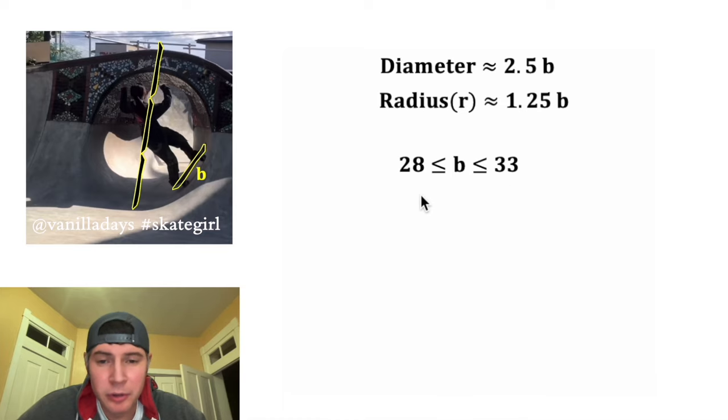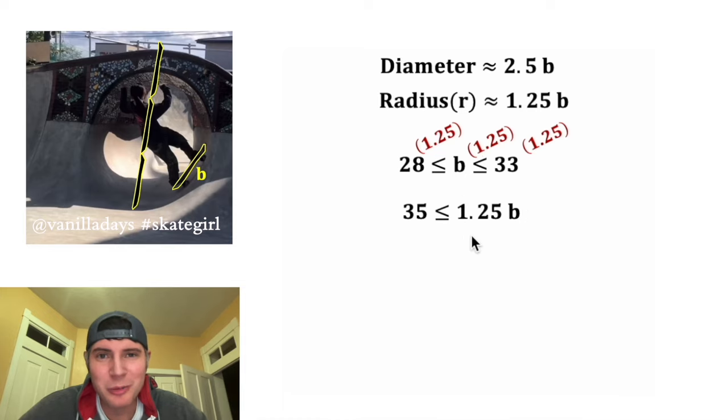Let's get rid of the labels. I want to relate this compound inequality with our circle. Instead of b, I'm more interested in r, so for the next step let's multiply this b times 1.25 so we can find out the radius. Whatever we do to the middle we have to do to all three of them, so we're going to multiply all these by 1.25. 28 times 1.25 is 35, and then 1.25 times b will be 1.25b, but we know that 1.25b is the radius, so let's change this to r. And then 33 times 1.25 is 41.25.